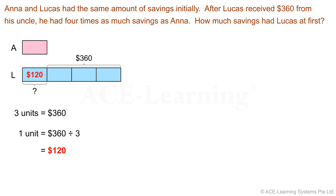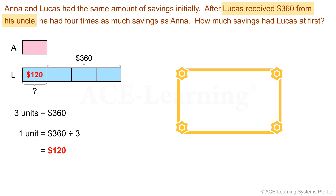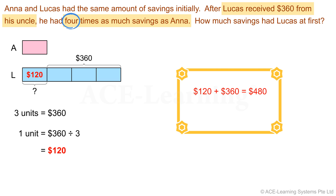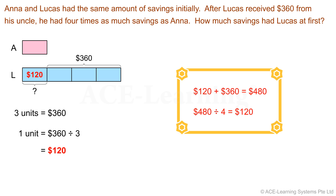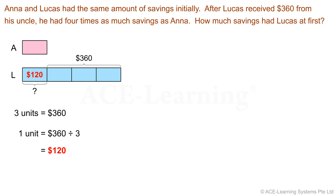Let's verify our answer. We are told that Lucas and Anna have the same amount of savings at first, so Anna should also have $120 at first. After Lucas received $360 from his uncle, he would have $120 + $360 = $480. This amount is four times that of Anna's savings, so Anna's savings would be $480 ÷ 4 = $120, which is the same amount Lucas had at first. This is correct. Lucas had $120 at first. Well done — we have solved the problem.